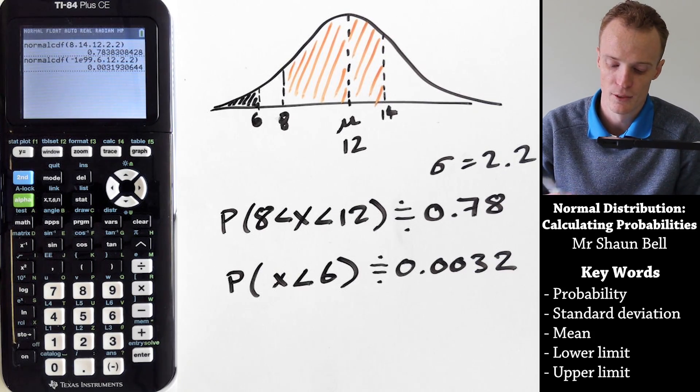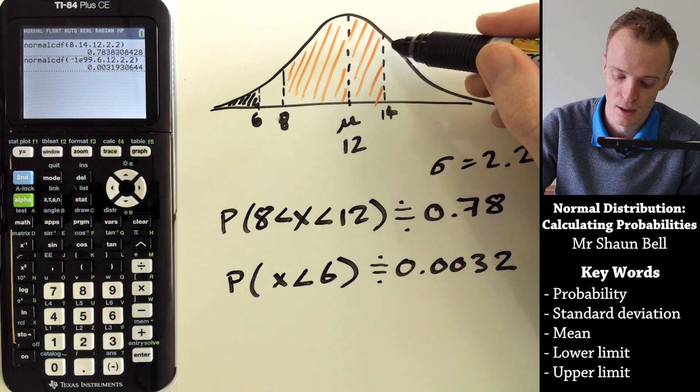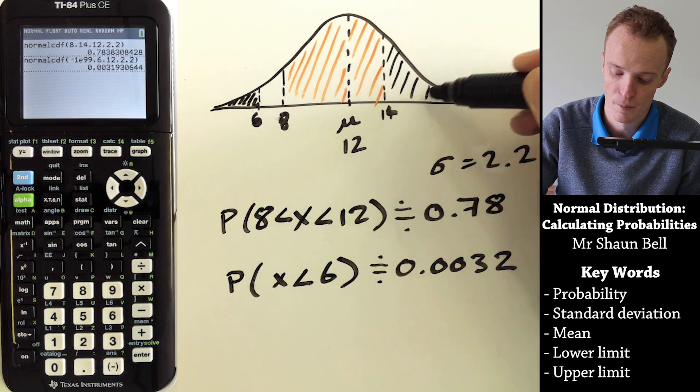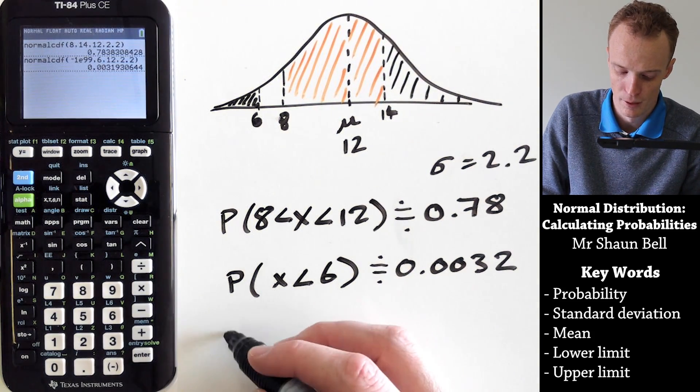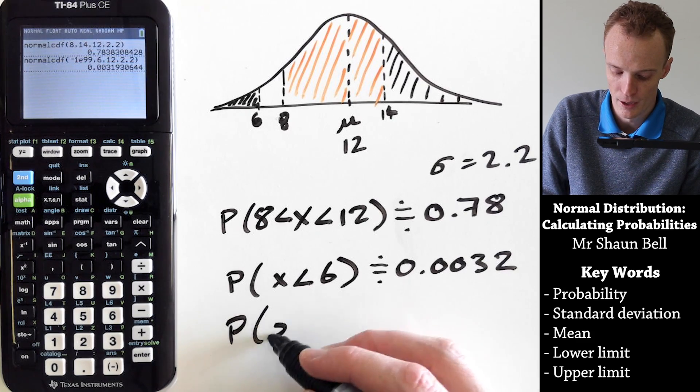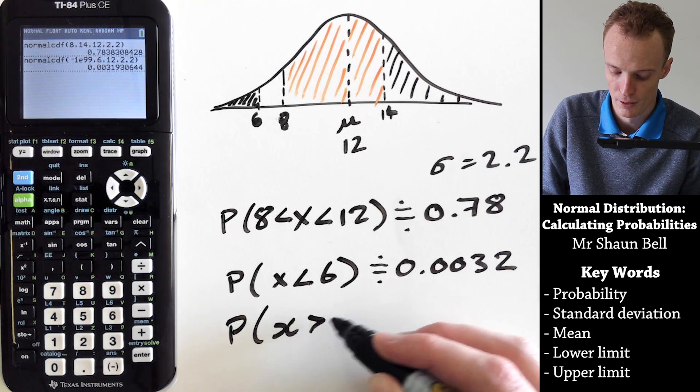For example, if I want to know the chance of getting one that's higher than 14 here, so this area in here, I'd be looking at the probability that my x is greater than 14.